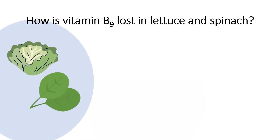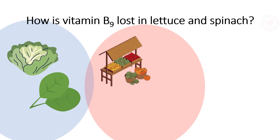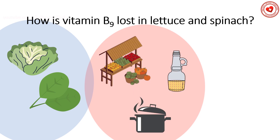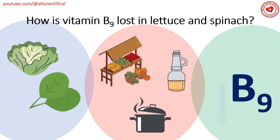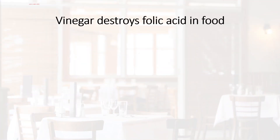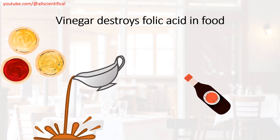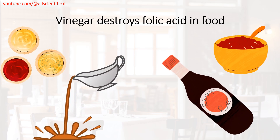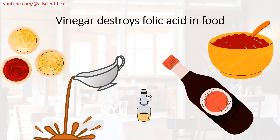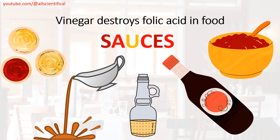How is vitamin B9 lost in lettuce and spinach? Due to long-term storage in warehouses, heat treatment, and the addition of vinegar, they contain a small amount of this substance. Vinegar and various sources containing vinegar very quickly destroy folic acid from lettuce.